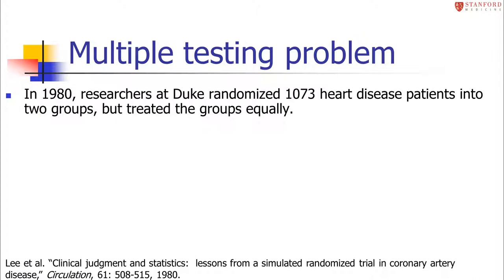They just randomly assigned those patients to either group one or group two — essentially put their names in an Excel spreadsheet based on whether they were in group one or group two, and then the study was done. This means that we know for sure there is no biological effect. We know that being in group one can't have done anything differently than group two. We know the null hypothesis is true.